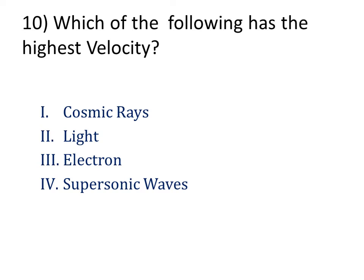Which of the following has the highest velocity? Our answer is Light. Light travels at 3×10⁸ meters per second in vacuum. The velocity of light changes as it travels through various media like air, glass, and water.